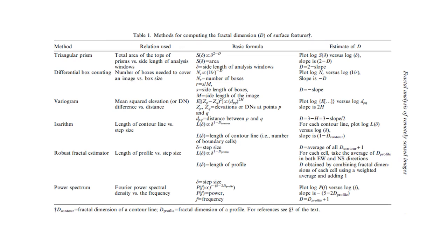Talking about the different methods to compute the fractal dimension D of surface features. Besides the triangular prism method, there is differential box counting, which uses the relation of number of boxes needed to cover an image versus box size. And variogram, which uses the relation of mean squared elevation or DN difference versus distance. Isarithm, which uses length of contour lines versus step size. Robust fractal estimator, which uses length of profile versus step size. And power spectrum, which uses Fourier power spectral density versus frequency. The fractal dimension of a contour line is denoted by D_contour, and the fractal dimension of a profile is represented by D_profile in the figure showing the formulas.